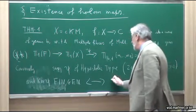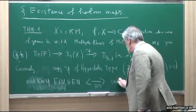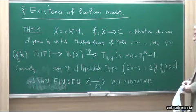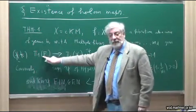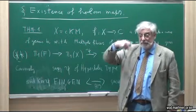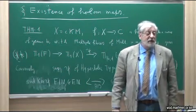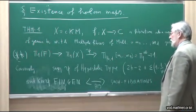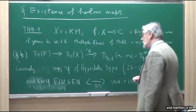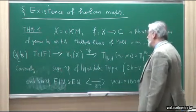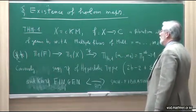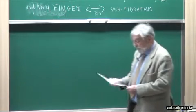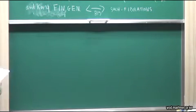The general fiber F is a compact Kähler manifold, and a compact manifold has a finitely generated fundamental group. So such a fibration gives a kernel which is finitely generated. Conversely, such a surjection gives a holomorphic map.